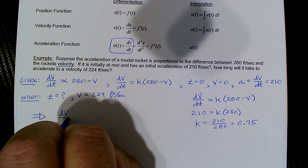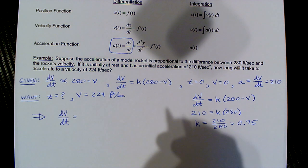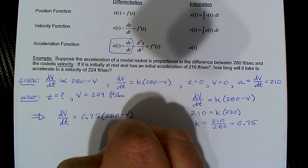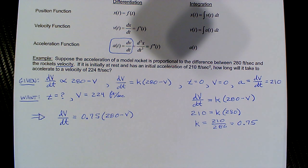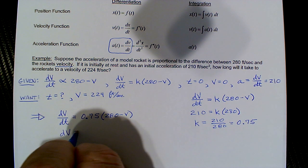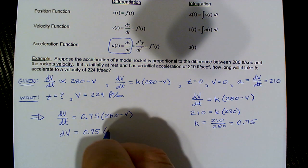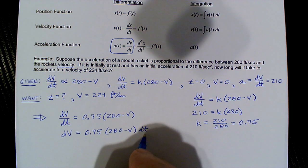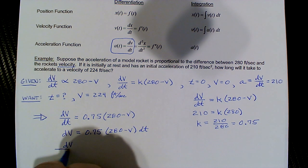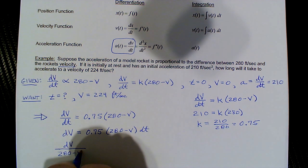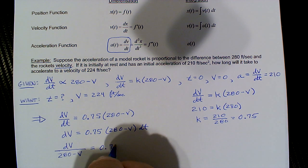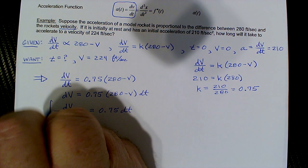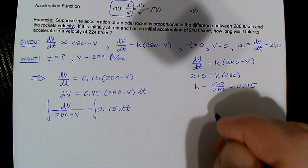We can now write the equation: dv/dt = 0.75(280 - v). Separating variables, we write dv = 0.75(280 - v) dt, then divide by (280 - v) to get dv/(280 - v) = 0.75 dt. Now we integrate both sides.